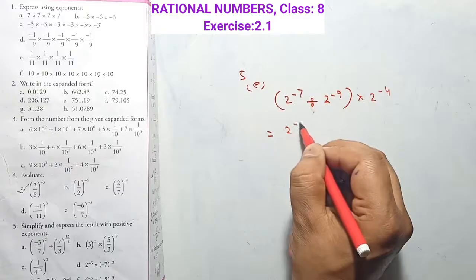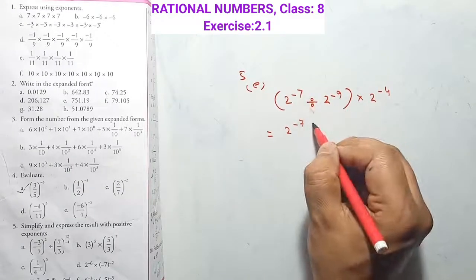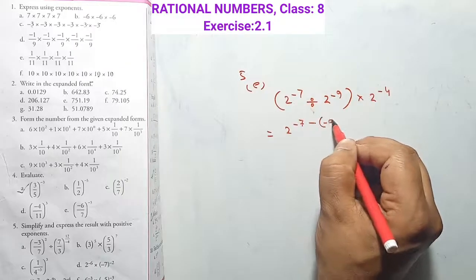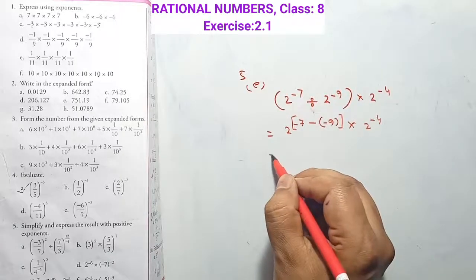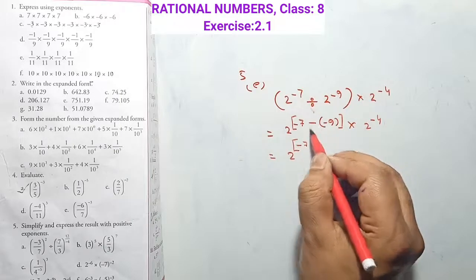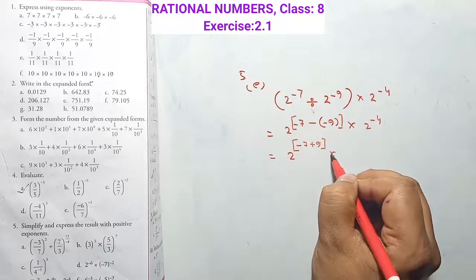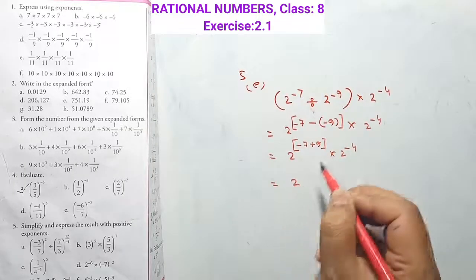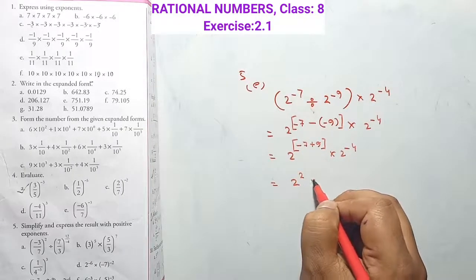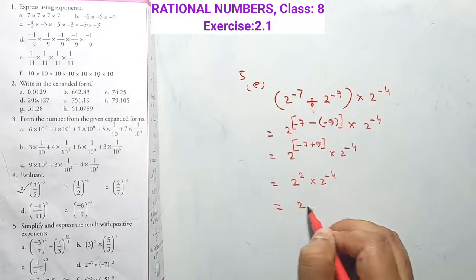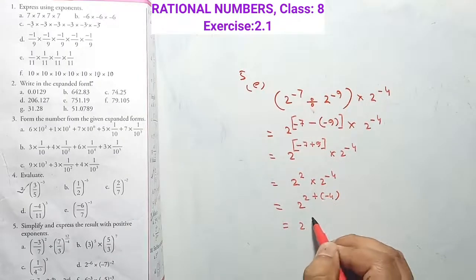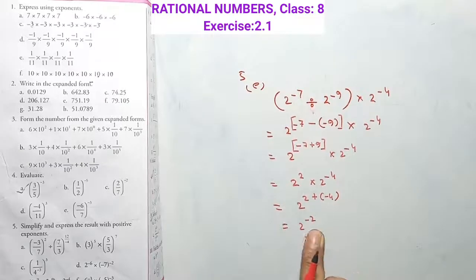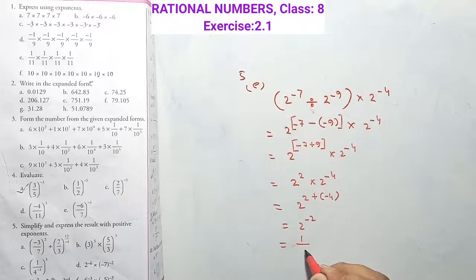Question E solution: Here 2 power minus 7 is divided and the base is the same, so we can write it using the formula a^m ÷ a^n = a^(m−n). Minus minus 9 formula is used. Into 2 power minus 4: so 2 power minus 7, minus and minus becomes plus 9, into 2 power minus 4. Base is same so 2 power (2 + (−4)) = 2 power minus 2.